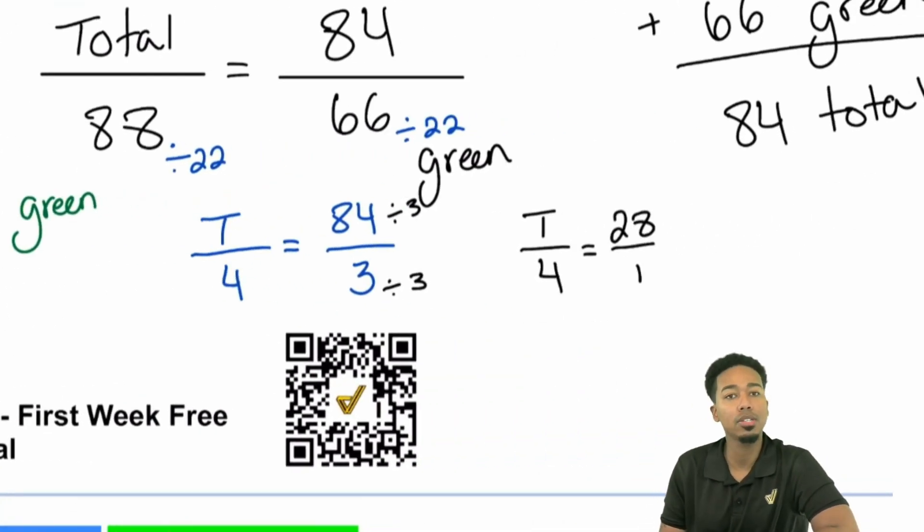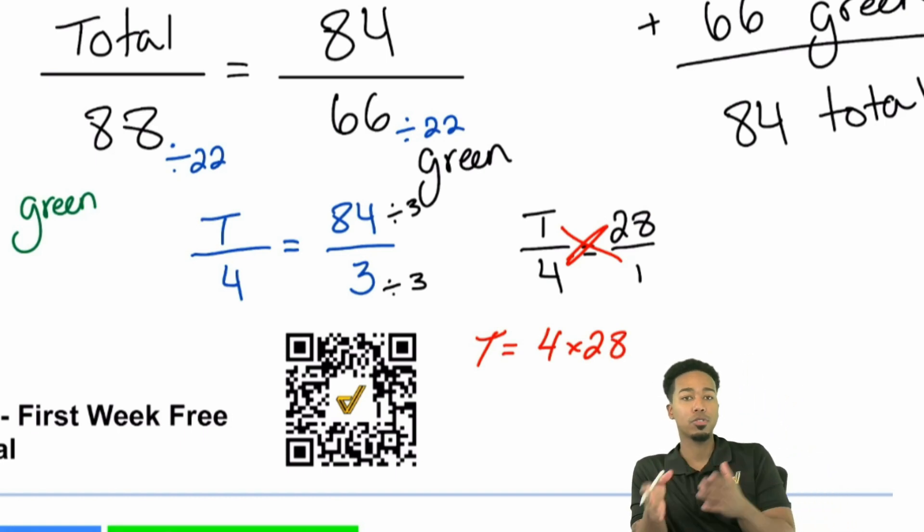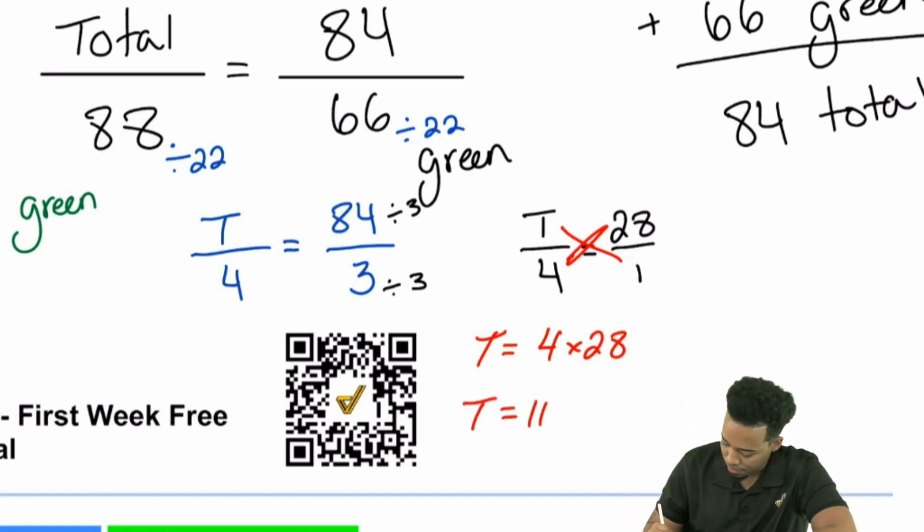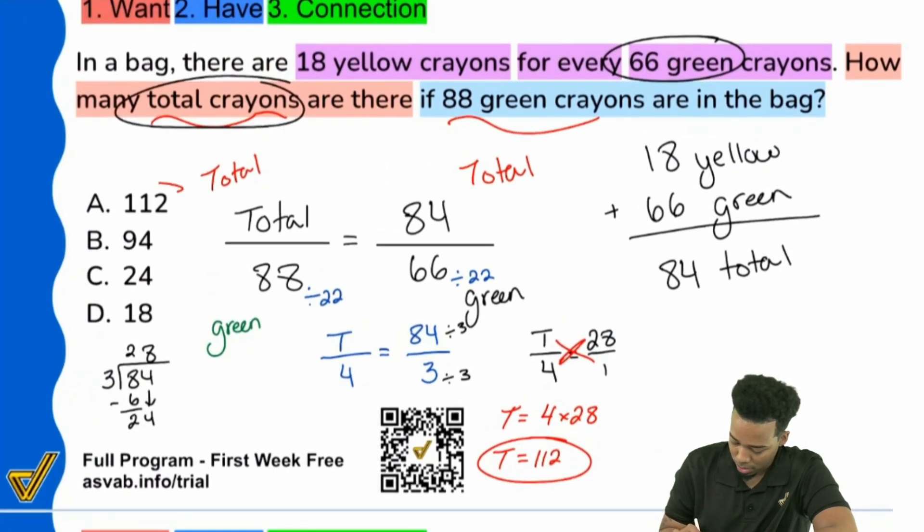So that gives me T over 4 equals, and that's going to be 28 over 1. Look at how much easier that makes my life. Again, that's with mental math first. And now you see that if you cross multiply, you get your answer instantly. T equals 4 times 28. And with a little bit of mental math, 4 times 20 is 80. 4 times 8 is 32. So 80 plus 32 is going to give us 112. And then there it is. The total is 112.